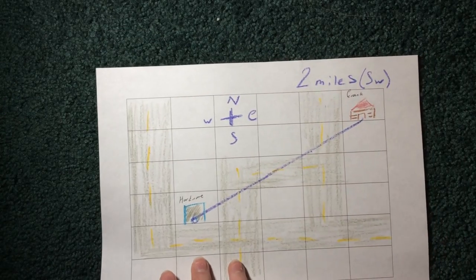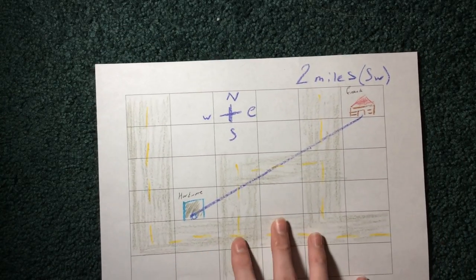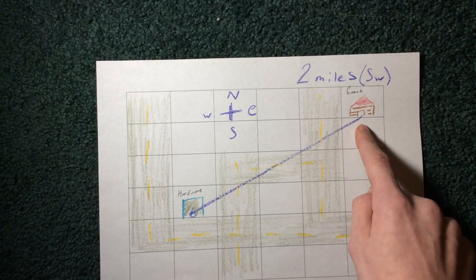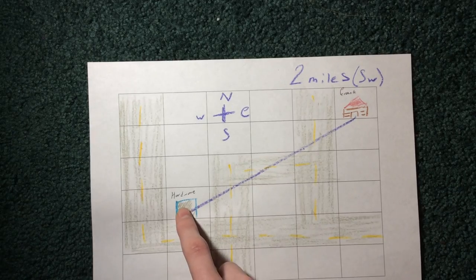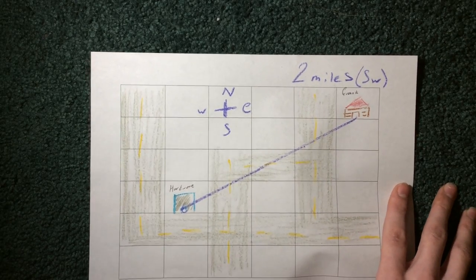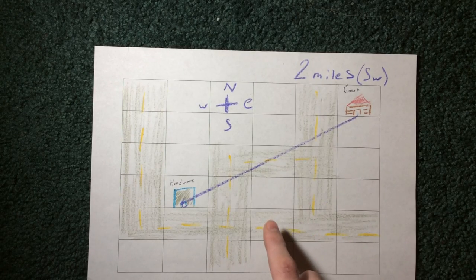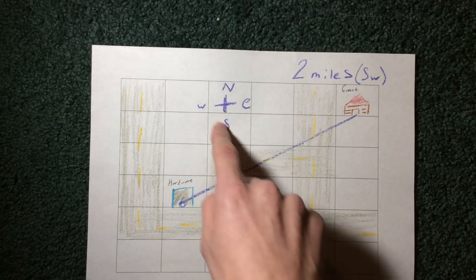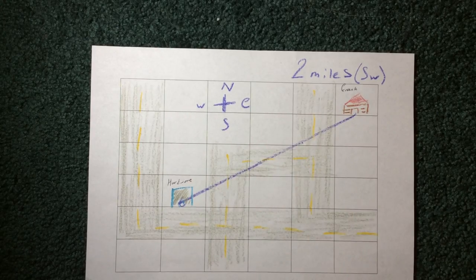So then, for displacement, if you weren't really law-abiding and you just didn't want to go to the roads, you could just drive straight over them to the hardware store, and that would be about two miles in my not-so-scaled image. And for displacement, you have to show the direction you went, so that's southwest, so you have two miles southwest.